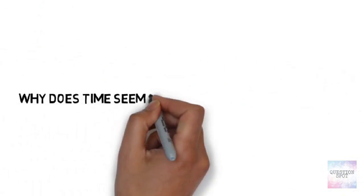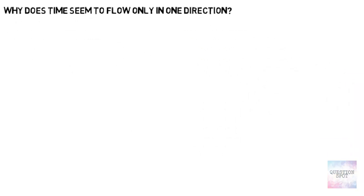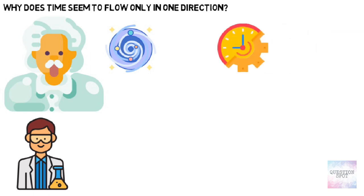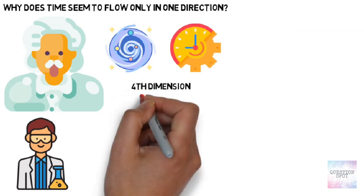3. Why does time seem to flow only in one direction? Since Einstein, physicists have thought of space and time as forming a four-dimensional structure known as space-time.